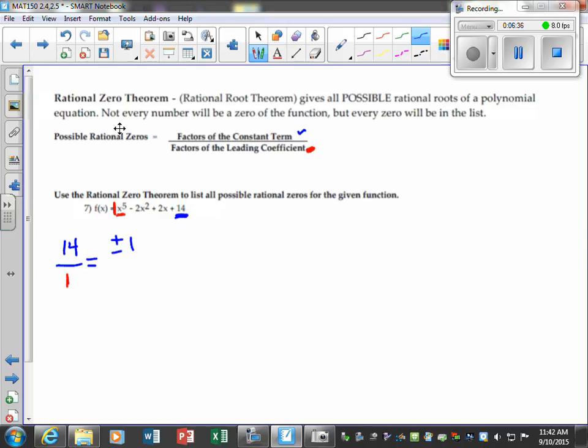And we want all the factors. Tell me every possible way you can multiply to get 14. 1 times 14, and I'm going to put them in order. And what's the other way to get 14? 2 and 7, and I always just put the plus or minus because it gives both. Now, I just like to line them up in order. Not that it's incorrect if you don't. And the only way to get 1 is plus or minus 1. 1 times 1.